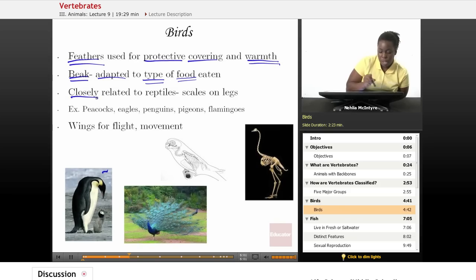Birds also are closely related to reptiles, which we'll talk about, because reptiles and birds both have scales on their legs. Well, birds have scales on their legs, and reptiles also have scales on their body.